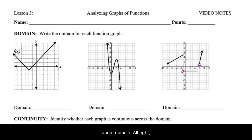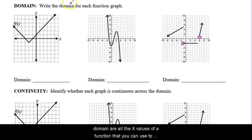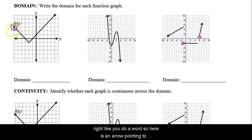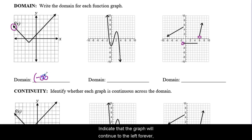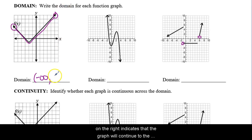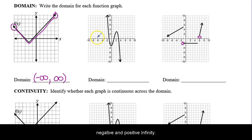To begin with, we'll talk about domain. Domain is all the x values of a function that you can use to generate a y value. When looking at the graph, I start on the left-hand side. You read a graph from left to right like you do a word. Here I see an arrow pointing to the left. Arrows pointing left indicate the graph continues toward negative infinity. Every x value is covered until you get to the arrow on the right, which indicates the graph continues toward positive infinity forever. This is interval notation, so we use parentheses for negative infinity and positive infinity.